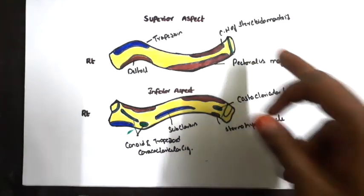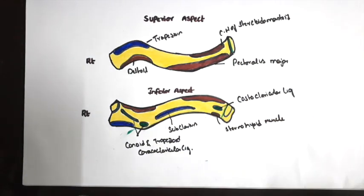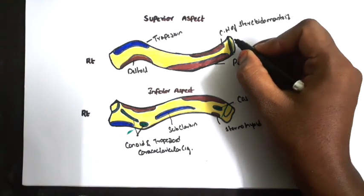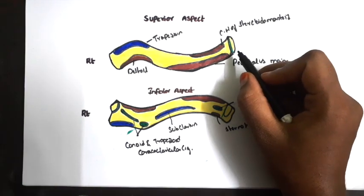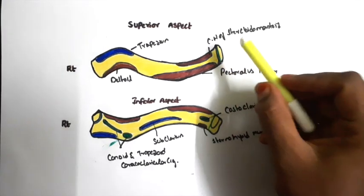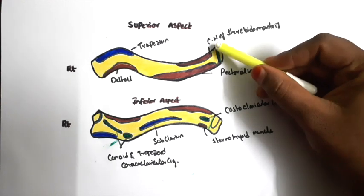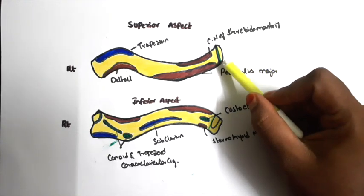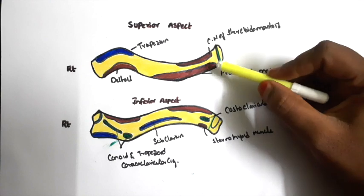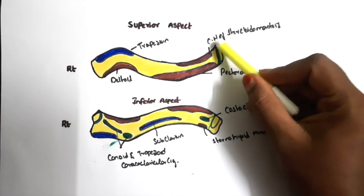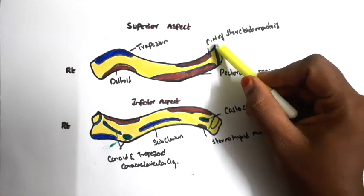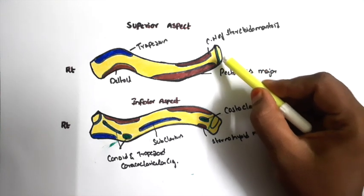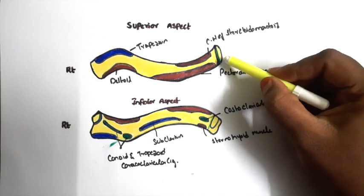Now we will see the attachments on the medial end, also called the sternal end. On this sternal end we see an articular capsule covered by the fibrous capsule. The entire medial margin is covered by the fibrous capsule, which articulates with the clavicular notch of the manubrium sterni to form the sternoclavicular joint. The superior aspect of the articular margin gives attachment for the interclavicular ligament. Posterosuperiorly it gives attachment for the articular disc, and the entire articular margin is covered by the fibrous capsule.